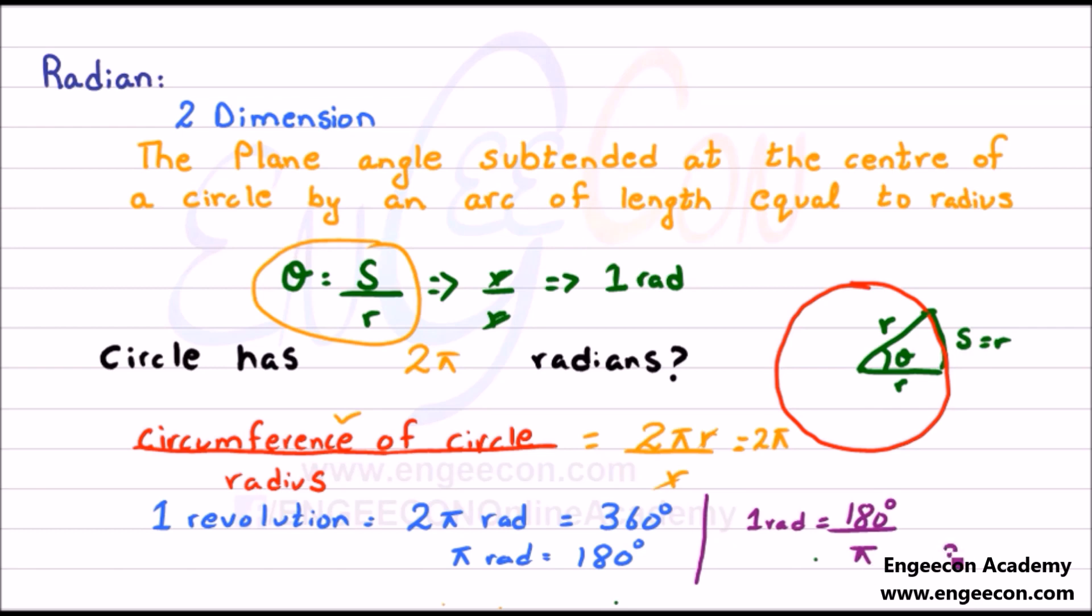As we know that π is equal to 3.14, so 1 radian is equal to 57.3 degrees.